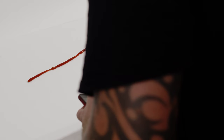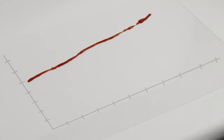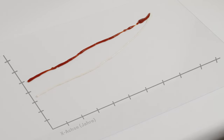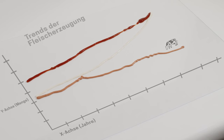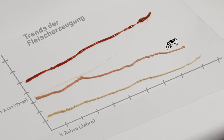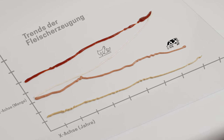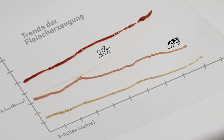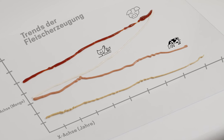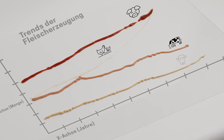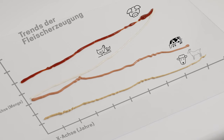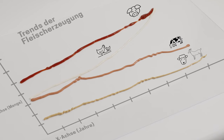Bei einem Verlaufsdiagramm wird die Entwicklung über einen bestimmten Zeitraum dargestellt. So kann man zum Beispiel die Produktion der verschiedenen Fleischarten über die letzten 30 Jahre darstellen. Die Grafik zeigt uns, dass der Bedarf an Geflügel sehr gestiegen ist und momentan das Schweinefleisch gleich auffliegt. Schaf- und Ziegenfleisch blieb dagegen auf gleichem Niveau.